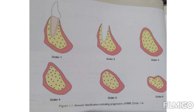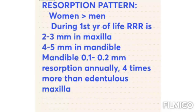The first picture shows Order 1 (pre-extraction), Order 2 (post-extraction), Order 3 (high well-rounded), and Order 4 (knife-edged) — the tip is knife-edged. Order 5 is low well-rounded, and Order 6 is depressed, showing a depression in the edge. Orders 3 and 5 look similar, but Order 3 is high well-rounded and Order 5 is low well-rounded.